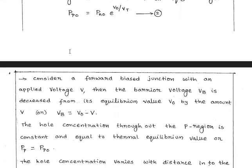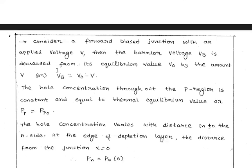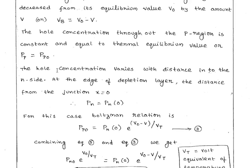Consider a forward biased junction with an applied voltage V. The barrier potential Vb is decreased from its equilibrium value V0 by an amount V, so Vb equals V0 minus V. The hole concentration throughout the p-region is constant and equals its thermal equilibrium value, that is pp equals pp0.